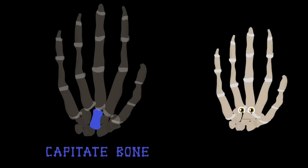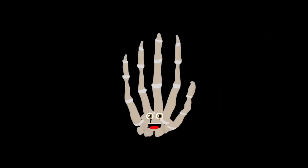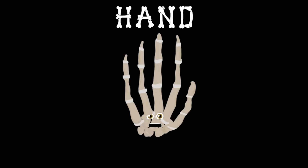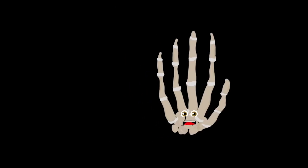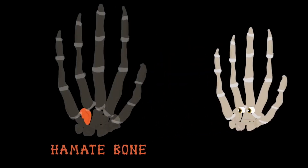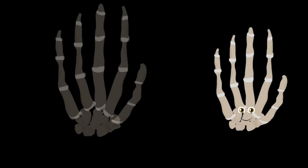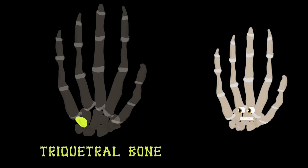How about I lend you a hand and tell you about me? There are 27 bones in the average hand. The hamate bone is injured by golfers — their club hits the ground and that is how the fracture occurs. Next to that is the triquetral bone.